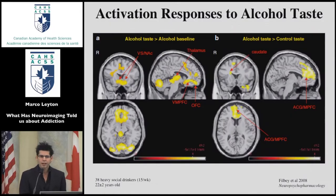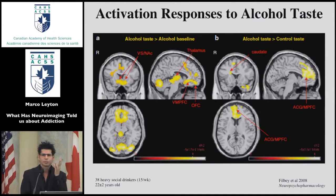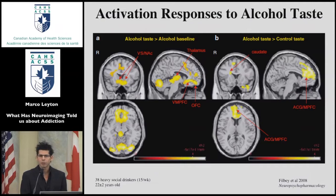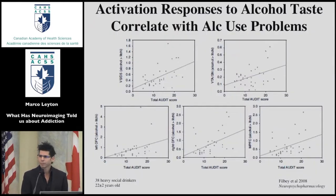We also see similar effects when we look at people who have actually started to abuse substances — mostly non-dependent but quite heavy social drinkers. The paradigm is really quite interesting: a tube in the mouth sprays small quantities of each individual's favorite preferred alcoholic beverage, compared to fruit juice. The alcohol taste produces larger effects in the same corticostriatal-thalamic circuit — limbic cortex and limbic striatum — and the greater the effect of these cues on this limbic system, the greater their alcohol use problems.